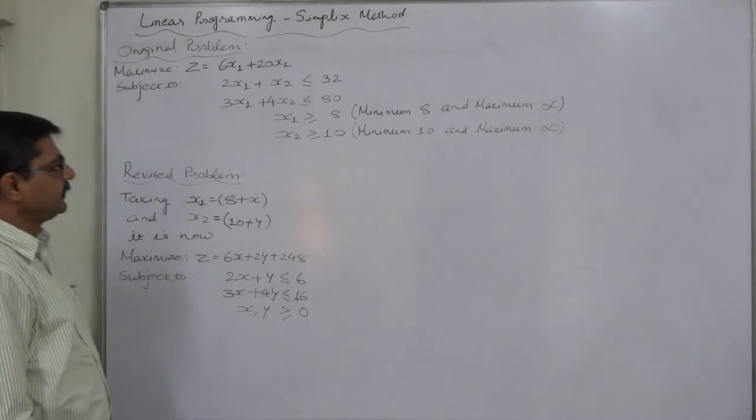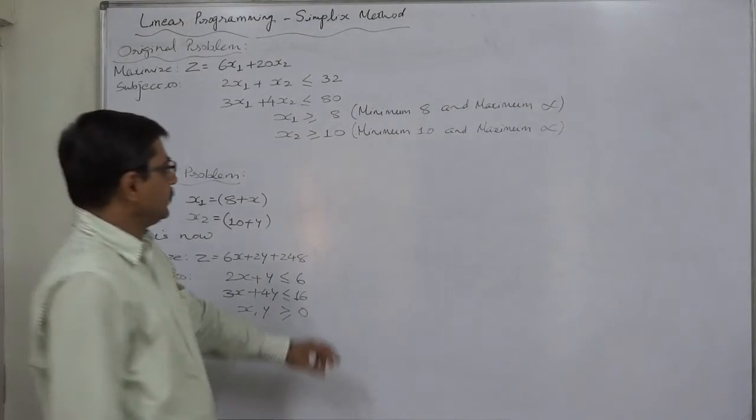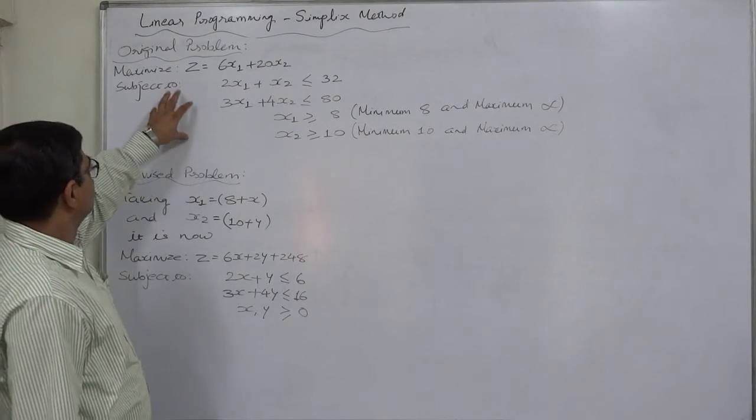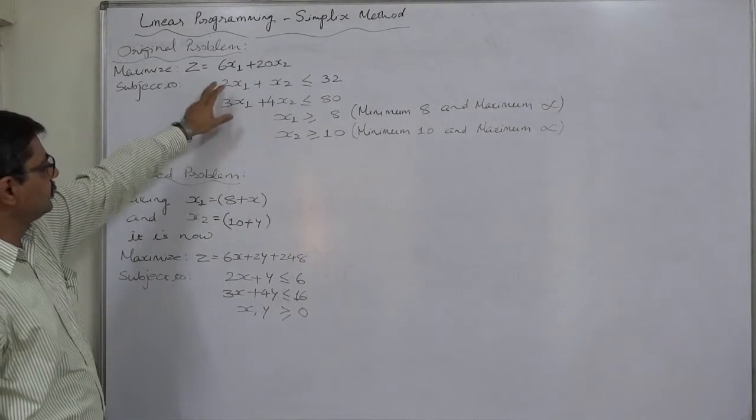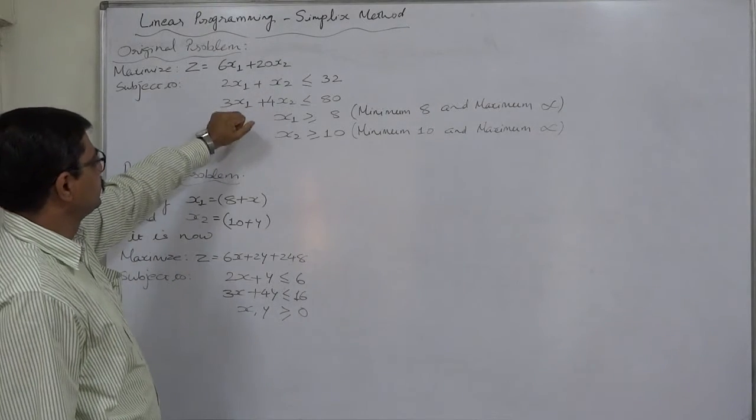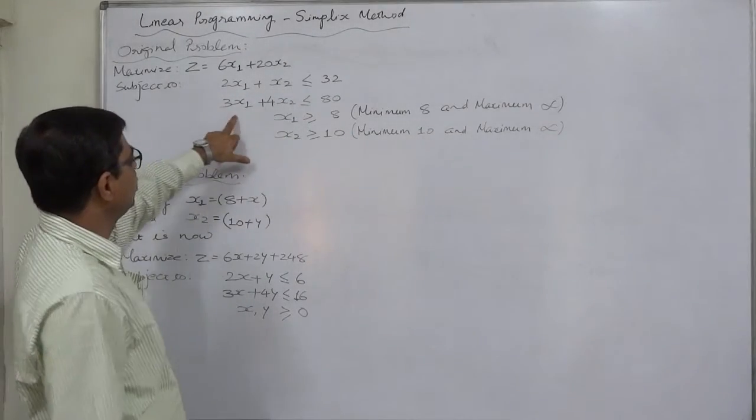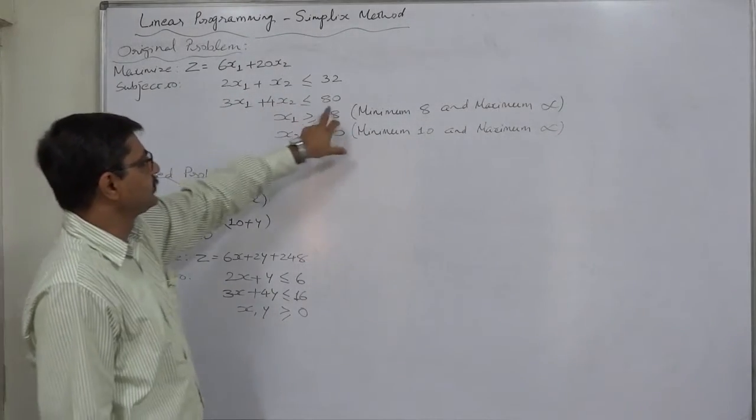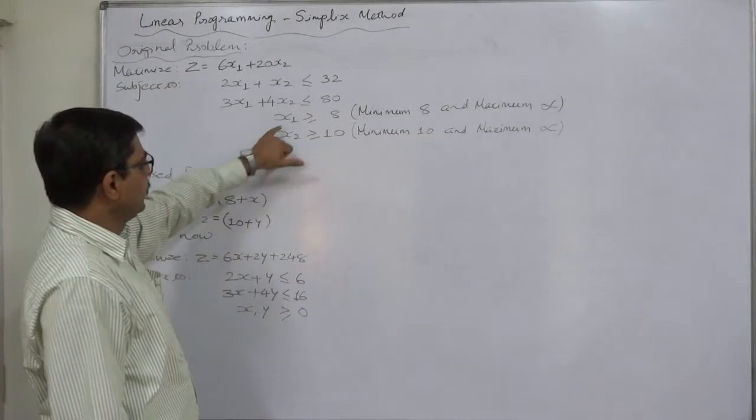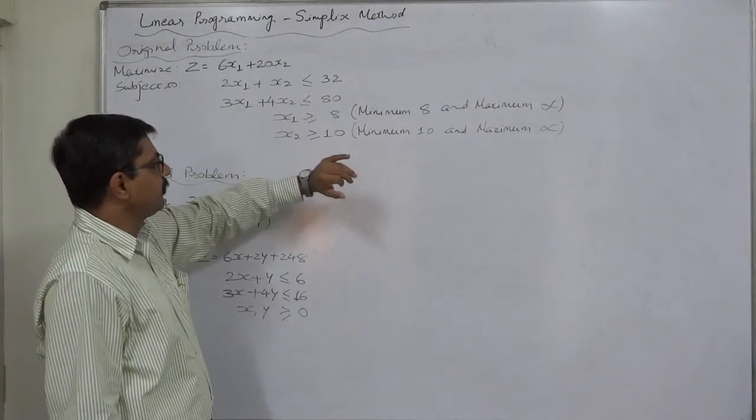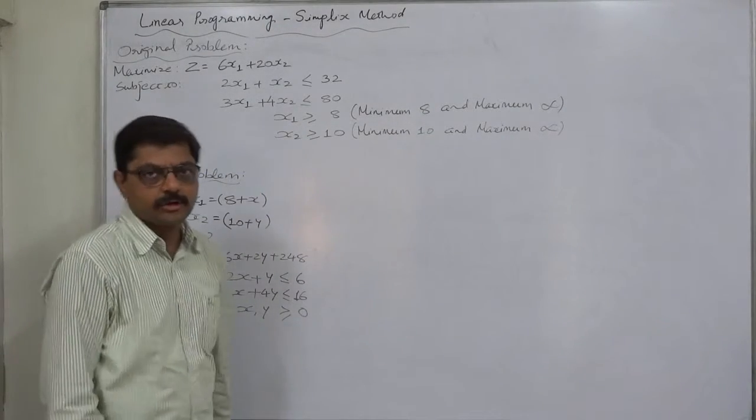Hello friends, the problem is maximize z equals to 6x1 plus 20x2 subject to 2x1 plus x2 less than or equal to 32, 3x1 plus 4x2 less than or equal to 80, x1 greater than or equal to 8 and x2 greater than or equal to 10.